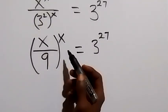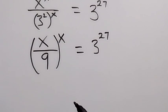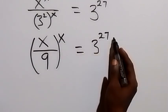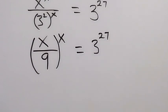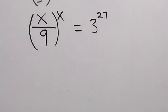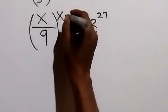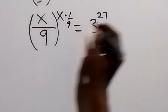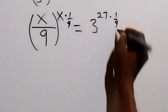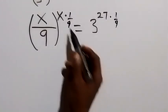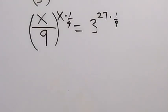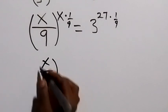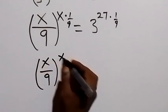In the next step, let's multiply both powers by 1 over 9. We multiply this power by 1 over 9 and also this power by 1 over 9. This power times 1 over 9 gives us x over 9, raised to power x over 9.